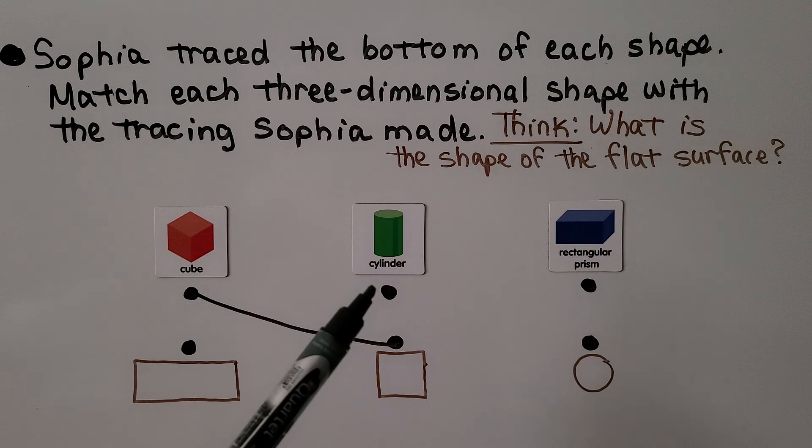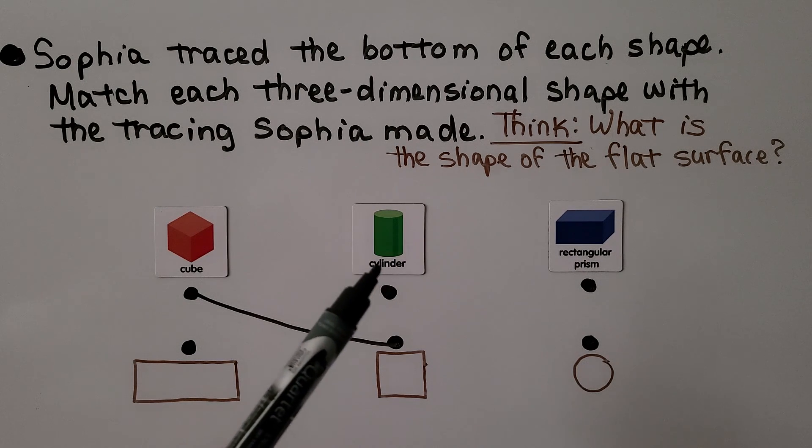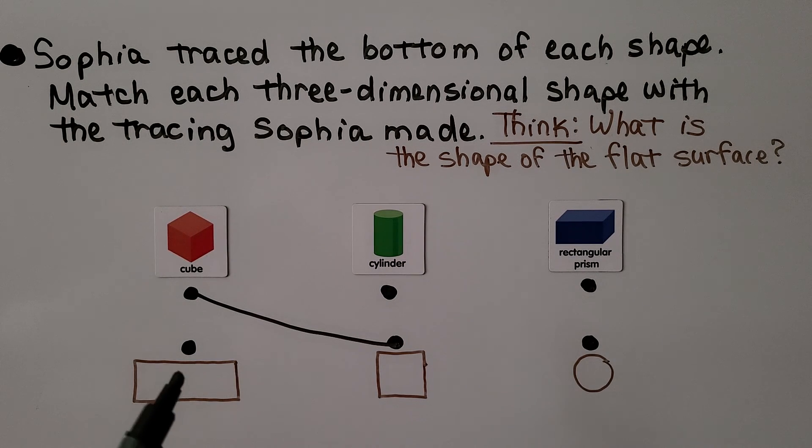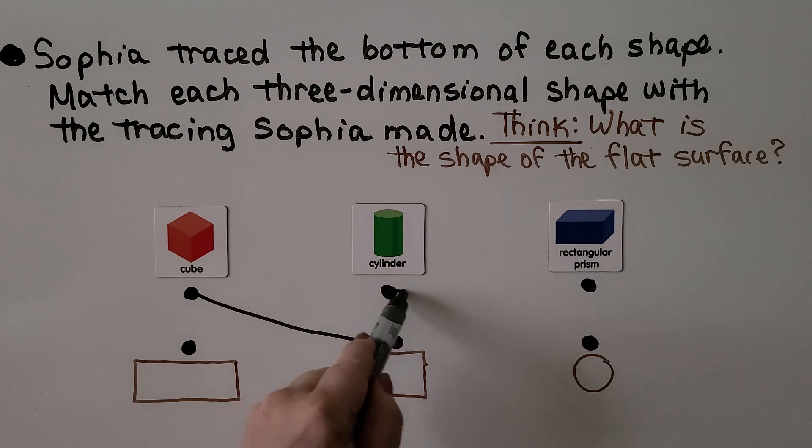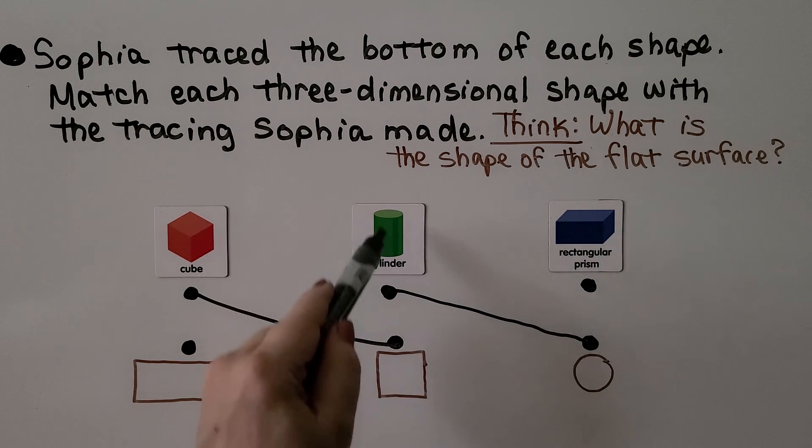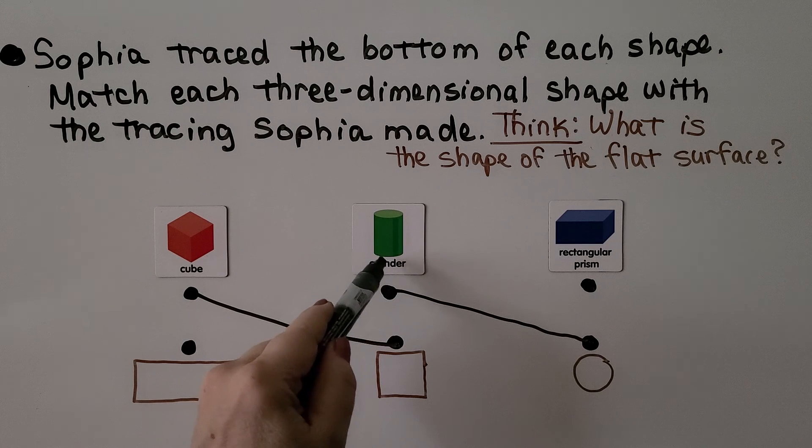What about the cylinder? If we trace the flat surface of a cylinder, would it make this shape or this shape? If you said circle, you're right. Its flat surface is a circle. And it has another circle on the bottom.